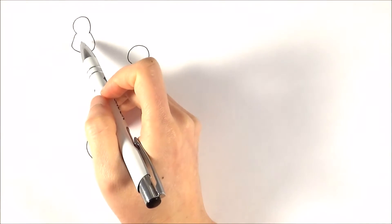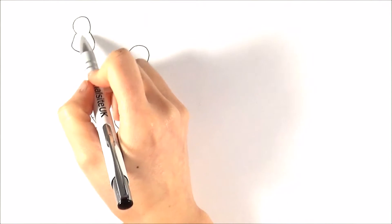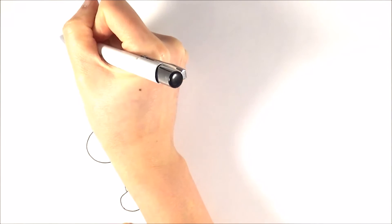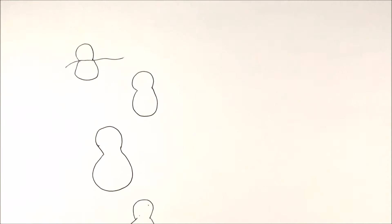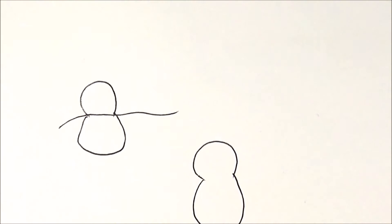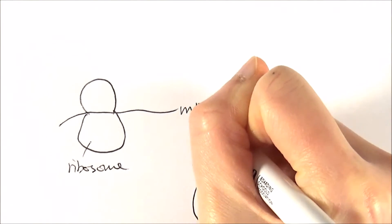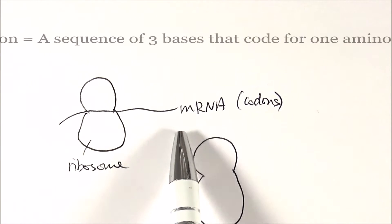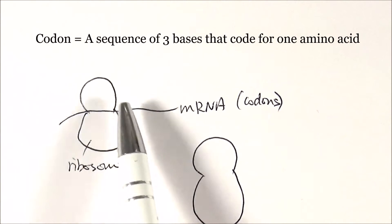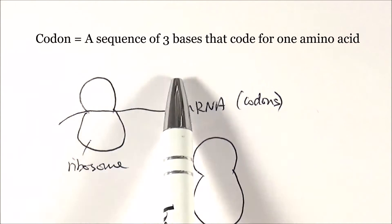In the first step, we have the ribosome, and the mRNA gets attached along the middle. We need to understand the components of translation. The ribosome is attached to the mRNA, and the mRNA has codons. A codon is a combination of three bases next to each other, which calls for one amino acid.